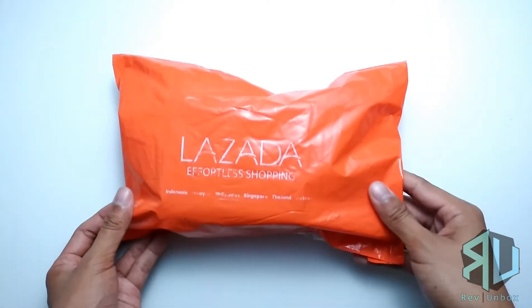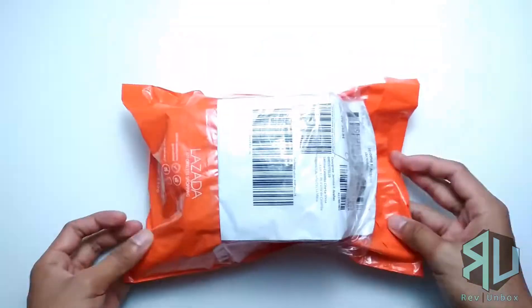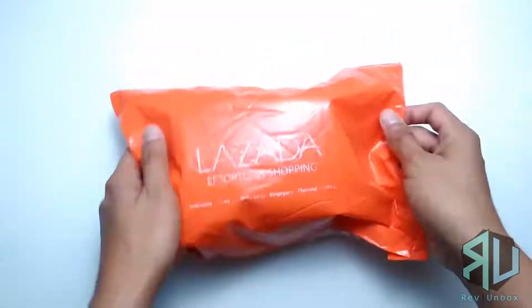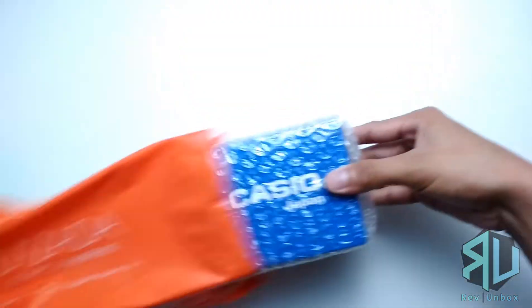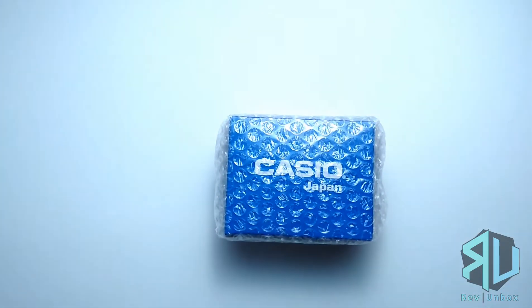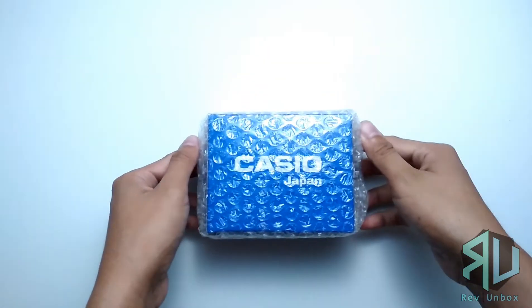So first, we unbox the Casio Men's Black Resin Strap Watch, sold by A&I Watches, fulfilled by Lazada. The box is in perfect condition, considering that it only has a layer of bubble wrap.